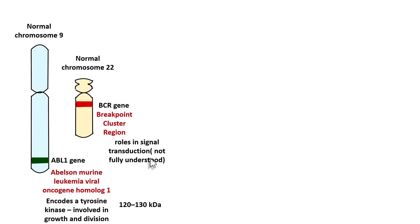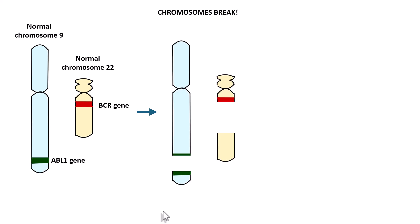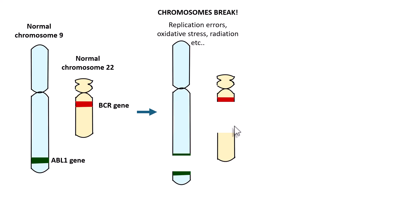What you need to know is that the tyrosine kinase size is around 120 to 130 kilodaltons in normal situations. During the process of replication, chromosomes can break — either because of normal replication error, oxidative stress, radiation exposure, or other causes. In normal situations, when chromosomes break, they tend to repair, as there are lots of DNA repair genes which help in repair.